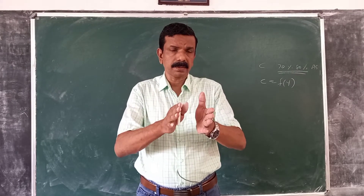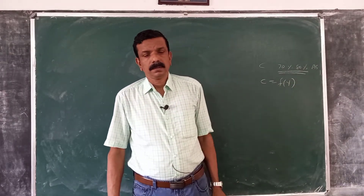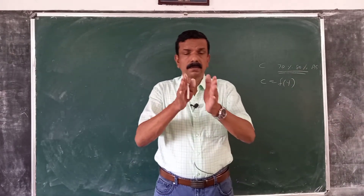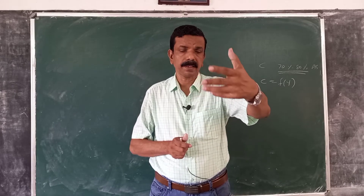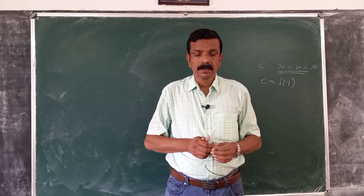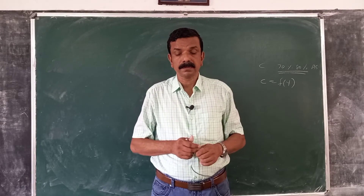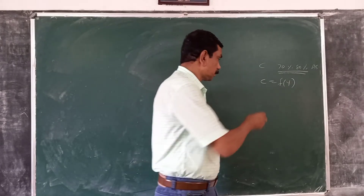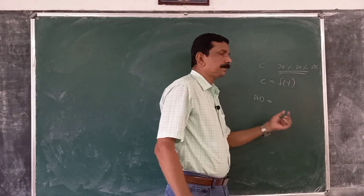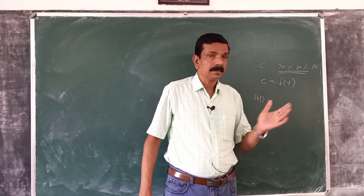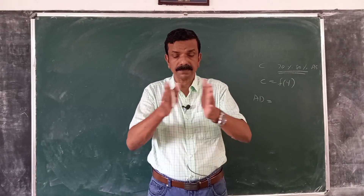That does not mean that consumption will not change. Consumption will change if and only if income changes. So, to explain the causes of movements in aggregate demand, and hence aggregate supply and income, Keynes looked to the autonomous component of aggregate demand. Autonomous components of aggregate demand are components independent of the level of income.